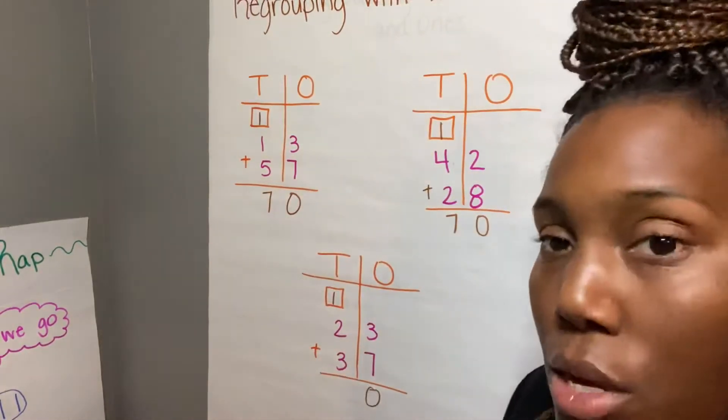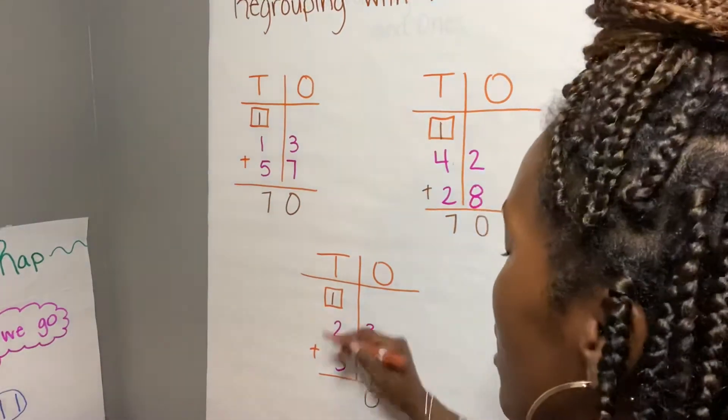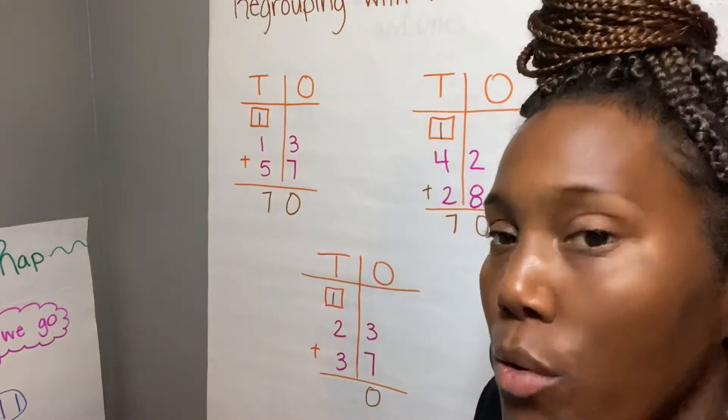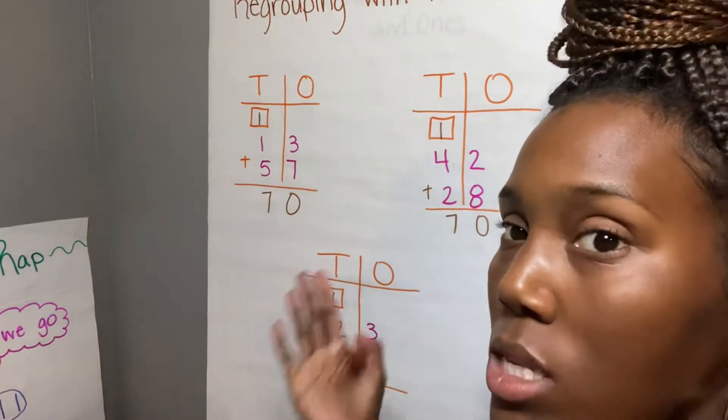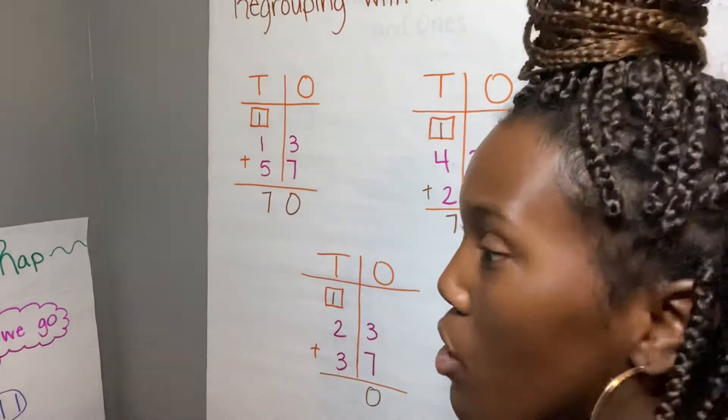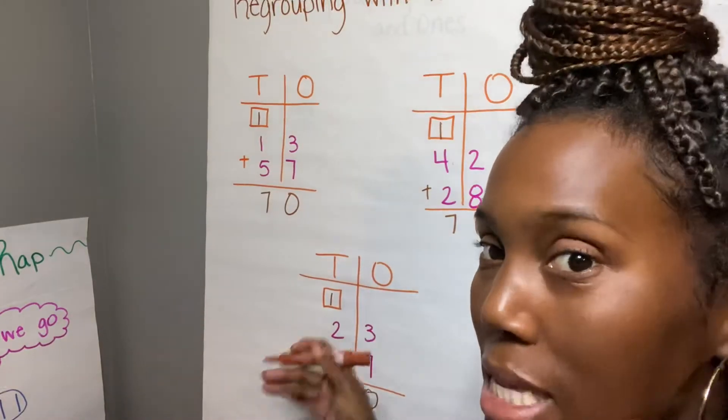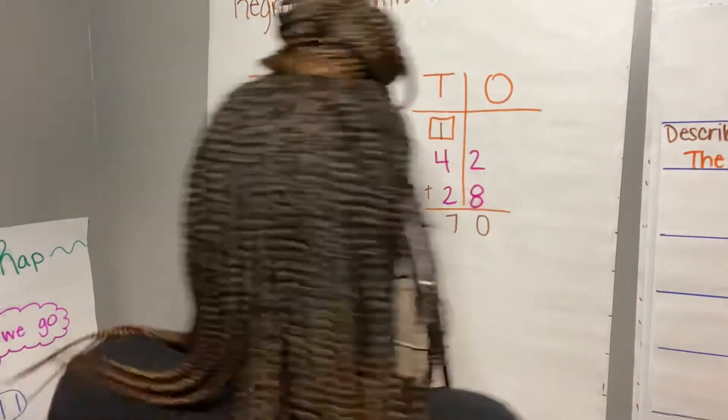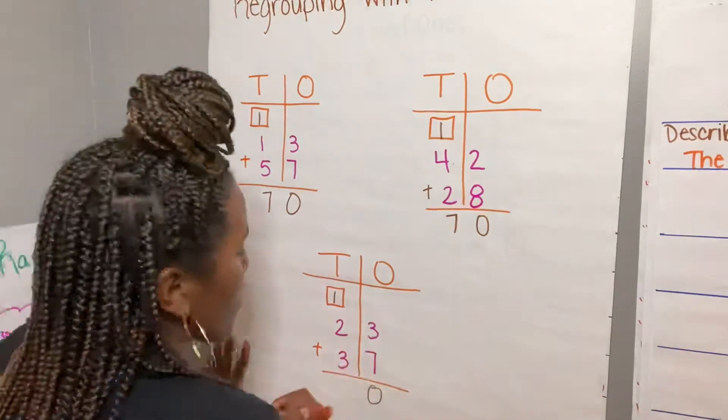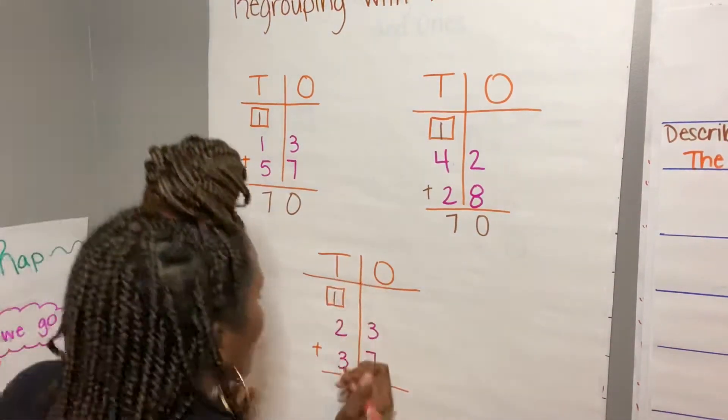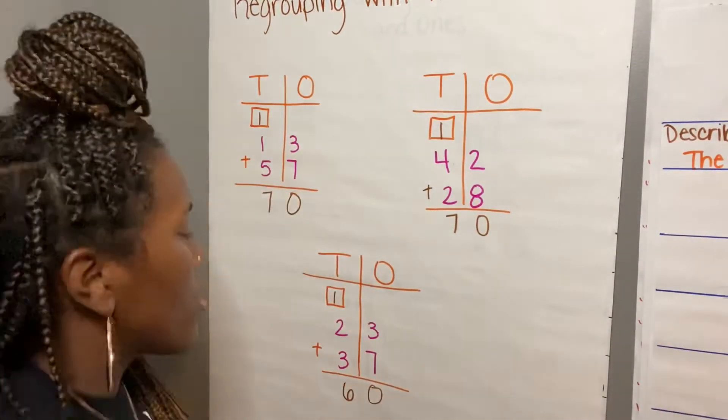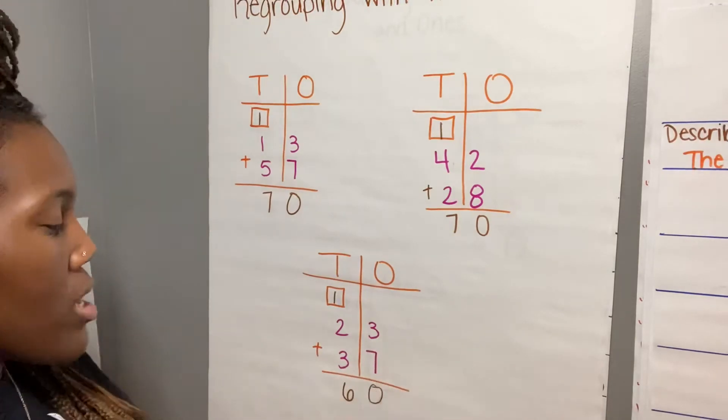1 plus 2 equals 3, and 3 plus 3, that's a double. We know 3 plus 3 equals 6. And if we go back to our doubles rap, 3 plus 3 equals 6. Let's mix. Okay, you guys know Miss Carter does this thing, but that was just for you guys. So 23 plus 37 equals 60.